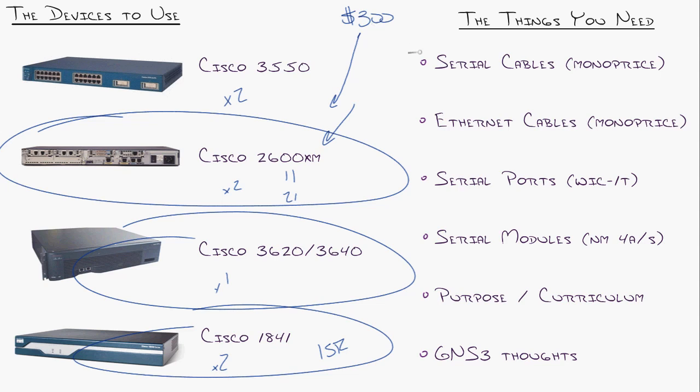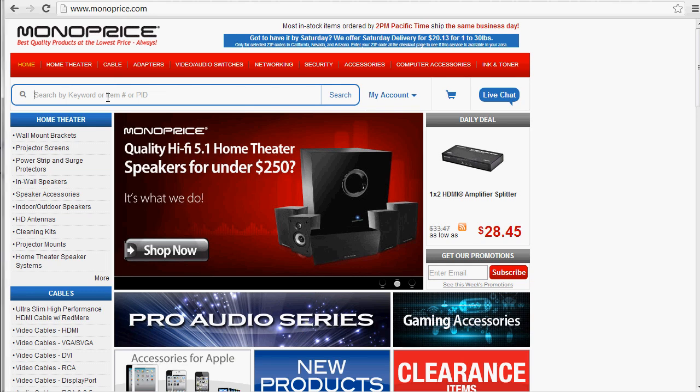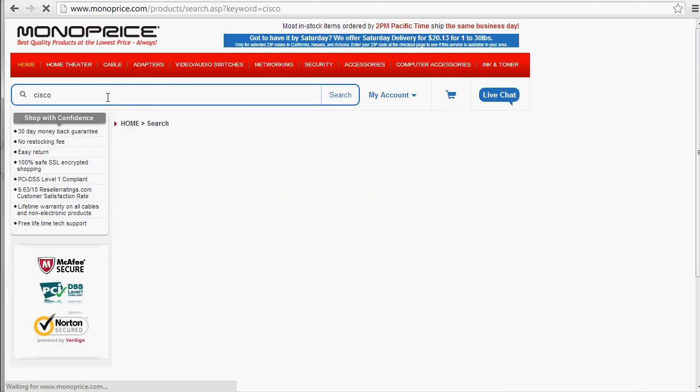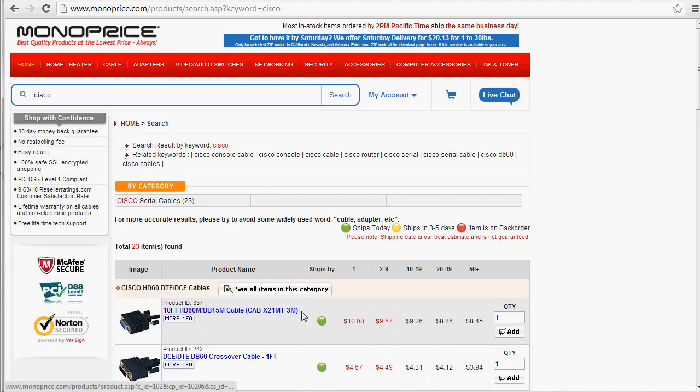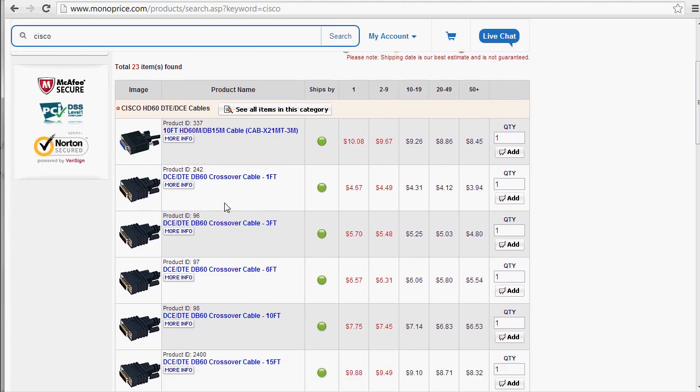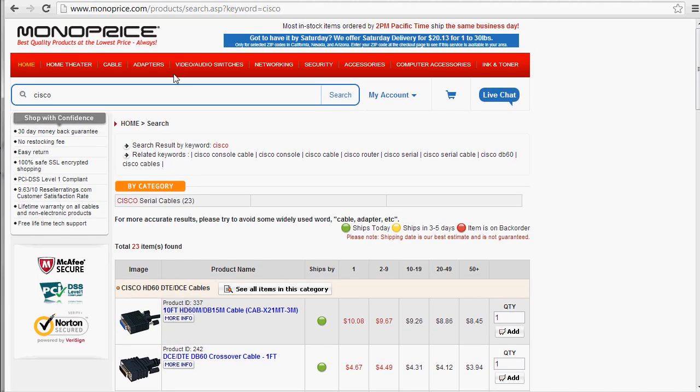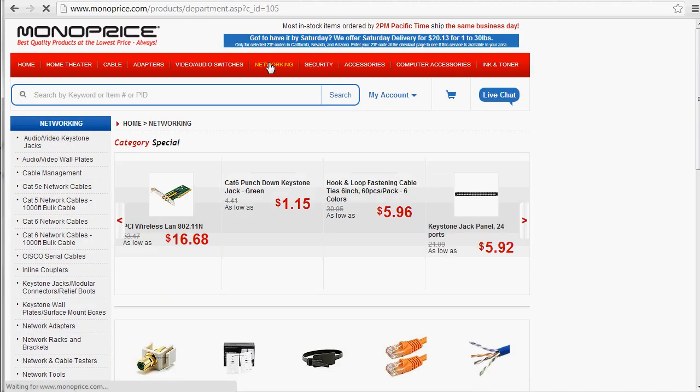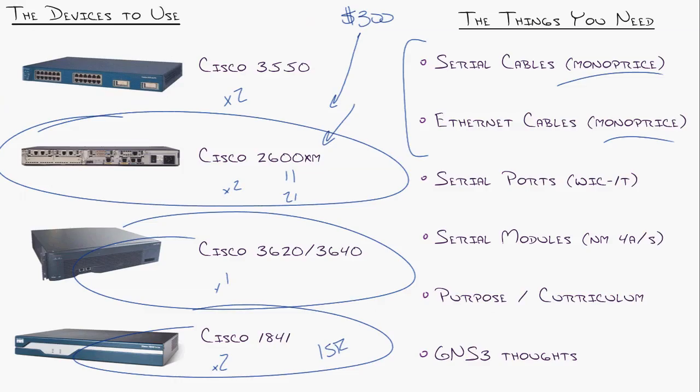Okay, now what about the things you need? You need some cables to connect these things together. My standby place nowadays, I love this place, is monoprice.com. No, I don't get any money for recommending this place, but I should. Right here if you type in Cisco, you can see they have Cisco serial cables, really good quality. Also if you want to browse through their networking section, they have ethernet cables, just at amazing prices. So you can pick some stuff up from there.